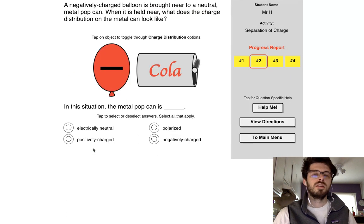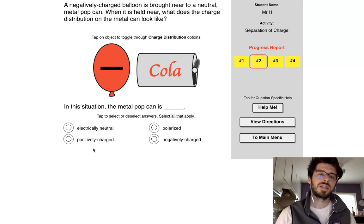Okay, so a negatively charged balloon is brought near to a neutral metal pop can. When it's held near, what does the charge distribution on the can look like? We can tap on the object to toggle through the charge distributions. If we're going to have a negatively charged balloon, that means all of the negatives in this can are going to want to travel as far away from that negative charge as possible.